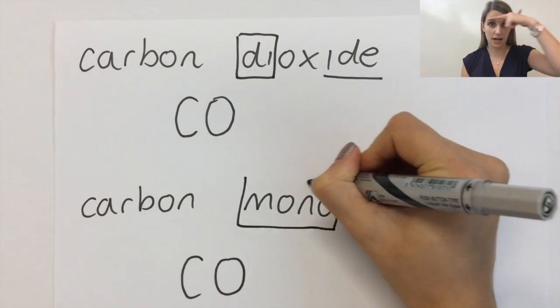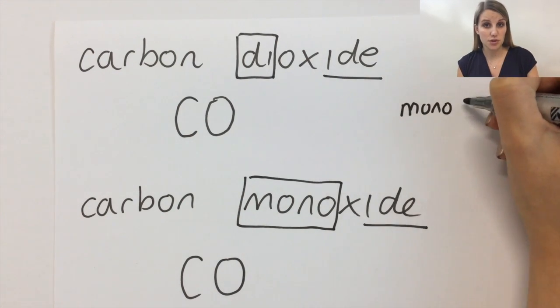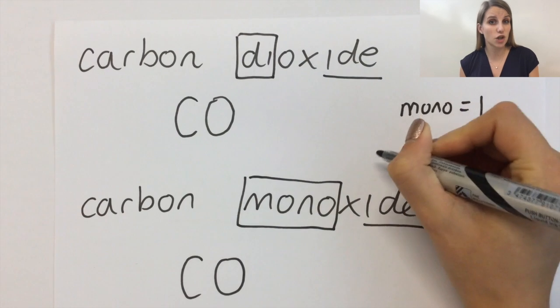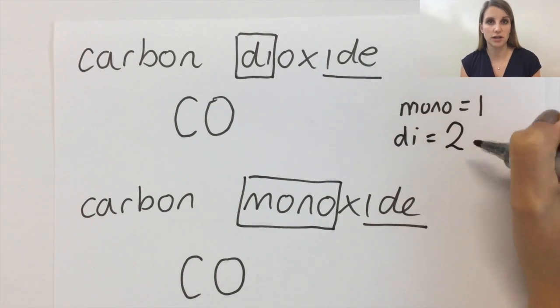Mono means one, kind of like mono brown, means one. And di means two. What that means is in this top one, the carbon has two oxygens bonded to it. Carbon dioxide.